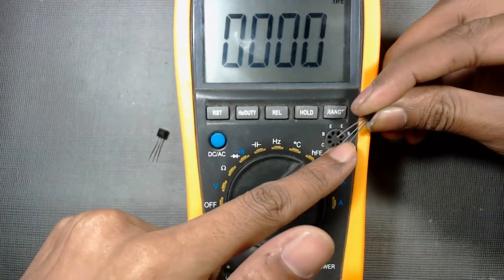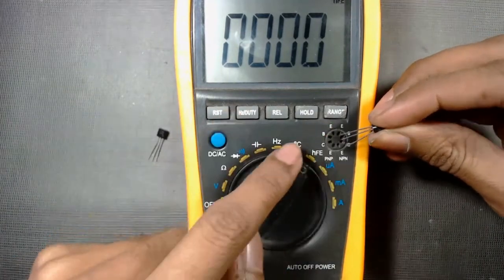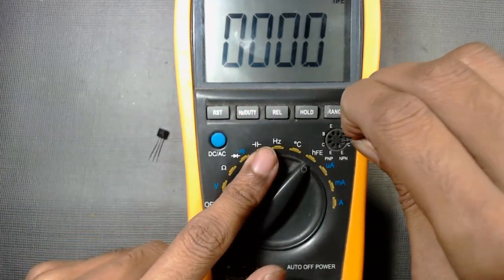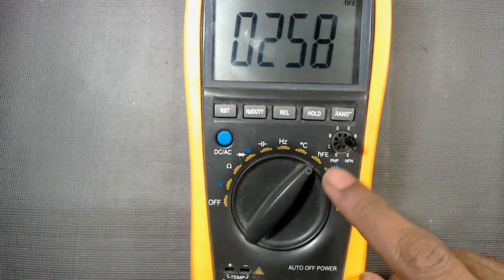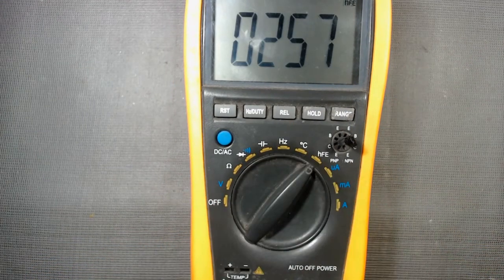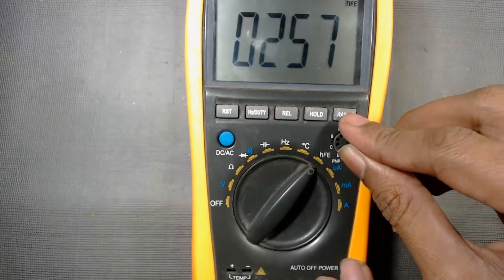and third one is emitter. So I have to insert it like this: emitter, base, collector. Let us insert it. You can see the hFE value is 258. That means the current gain value is 258 for this transistor.